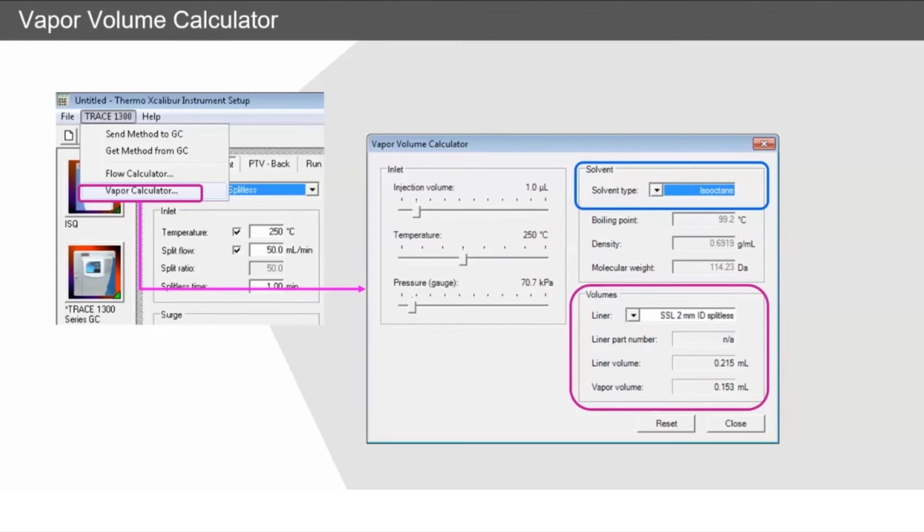We can also see what the liner volume is, and this is really important because we don't want the vapor volume to ever exceed the liner volume - this will cause issues like backflush into lines and carryover. In this example, we've got 0.15 mL vapor volume and a flow rate of 1 mL/min, which means everything's going to come through in less than half a minute. So our splitless time we would set for half a minute. Obviously, other solvents expand more and we need to take this into account.